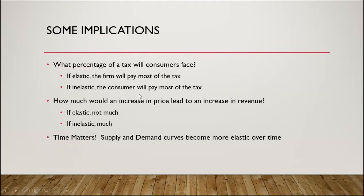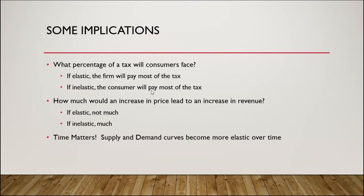If the good is relatively inelastic at the point of the tax, then the consumer ends up paying most of the tax — the firm can pass the tax on to the consumer. This is very important when discussions of policy come up. It's very popular for governments to say this is going to be a tax on the producers and they're the ones who are going to pay. But if the good is inelastic, then it turns out the consumer ends up paying most of the tax.